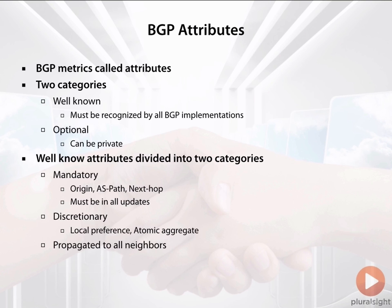They could also be discretionary. Local preference and atomic aggregate are examples of discretionary well-known attributes, which means they have to be understood by all BGP implementations, but they don't have to exist in the update. Well-known attributes are propagated to all neighbors.